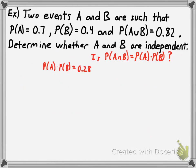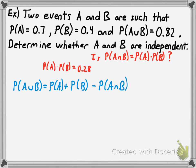But how do we find P(A and B) without using the product rule? That's why we were given the probability that either event occurs. We can use the addition rule from previous sections: P(A or B) = P(A) + P(B) − P(A and B). Using substitution, we know P(A or B) = 0.82 and we know the probabilities of A and B.